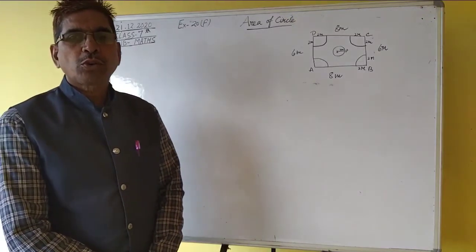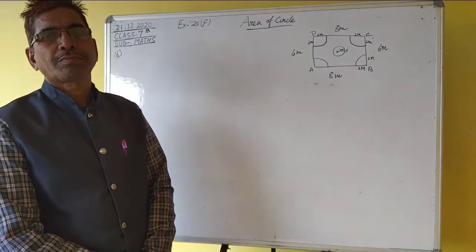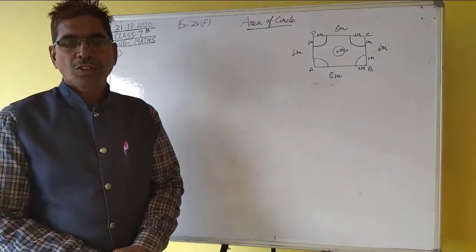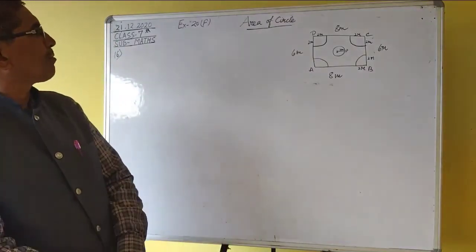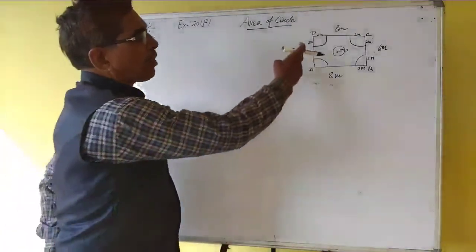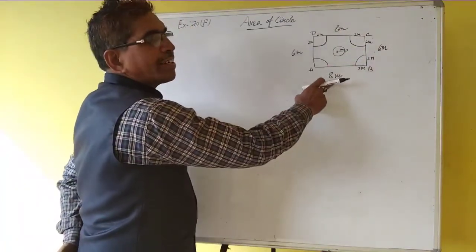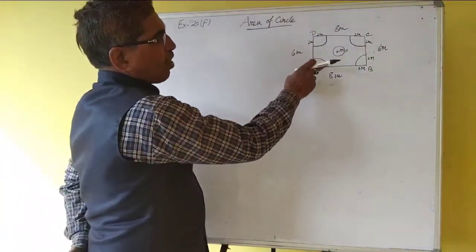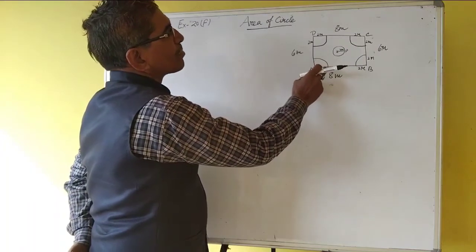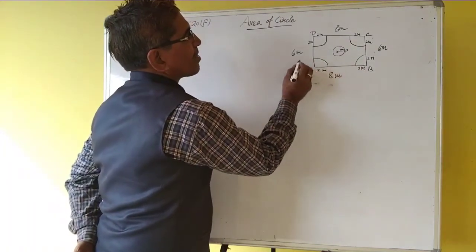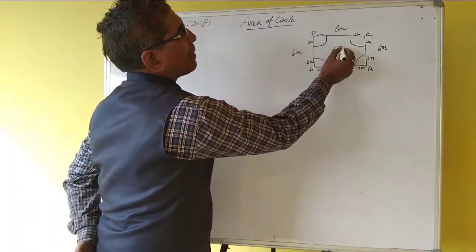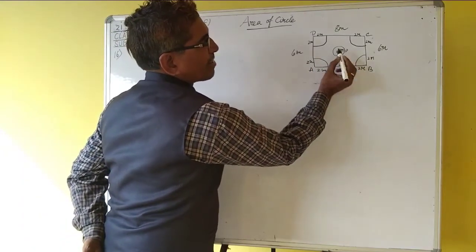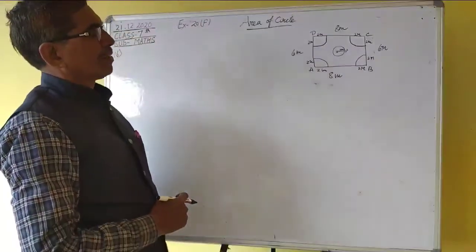Good morning students, nice to meet you today. Hope you are all fine. Today's math class topic is area of circle, Exercise 20F, Question Number 16. A rectangular plot ABCD is 8 meters by 6 meters. There are four flower beds in the corners of the field, each with 2 meter radius, and in the middle of the plot there is a circular flower bed whose radius is 2 meters. Find the area of the remaining plot.